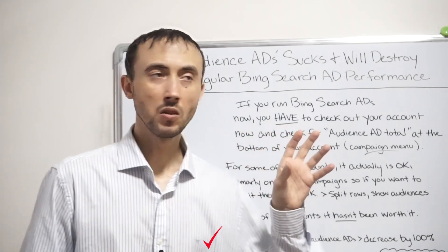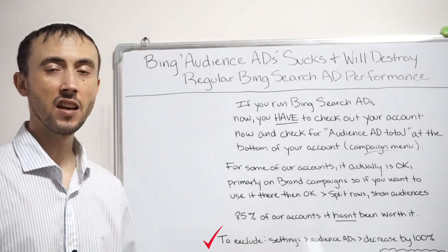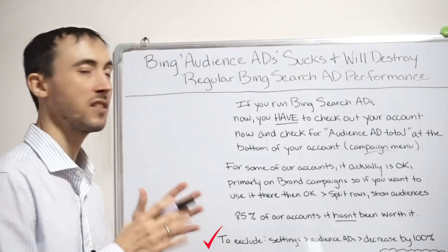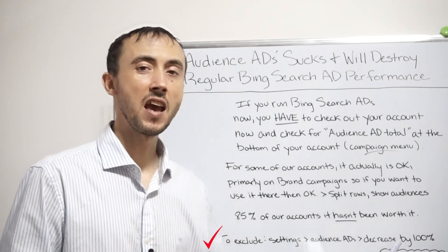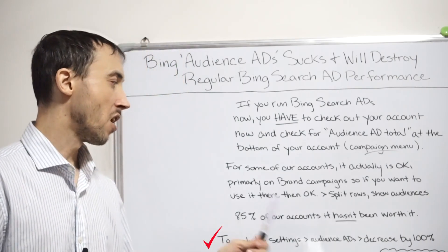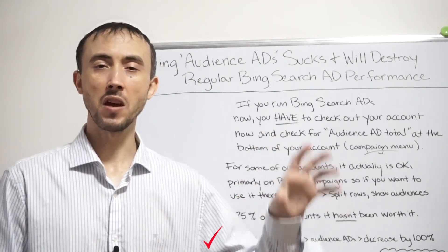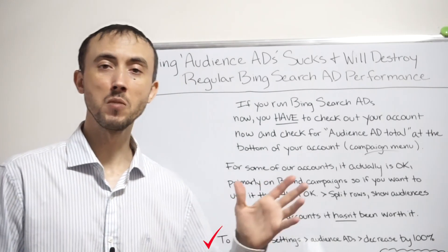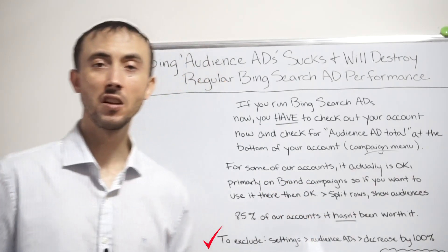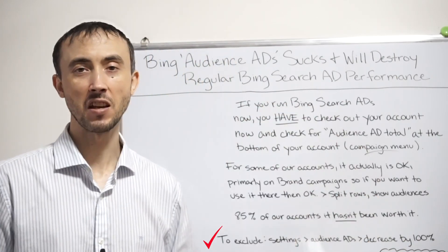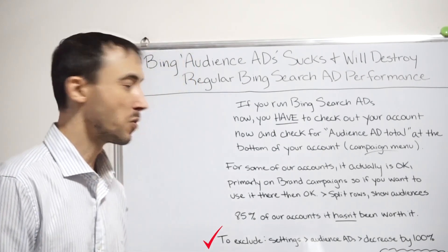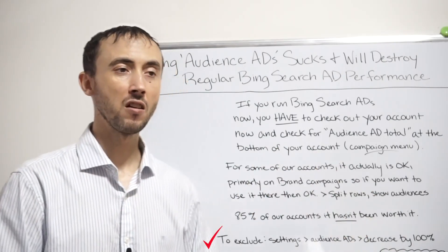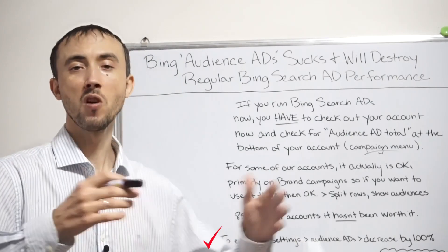That's audience ads in a nutshell. Again, if you're running Bing search ads, you are paying for audience ads unless you've already created a negative 100% bid adjustment on the audience ad part of the settings in each campaign inside your Bing account. You should definitely look into this — it could be eating into upwards of half of your budget, and you could potentially double the ROI in your campaign with just one simple adjustment that could take you 15 minutes to do. It's a big enough issue that I wanted to bring it up, since I don't see too many people talking about it.